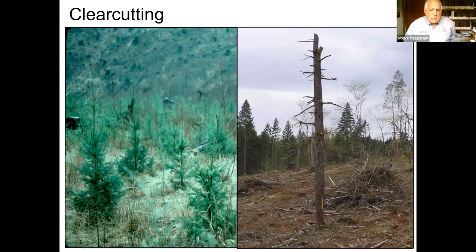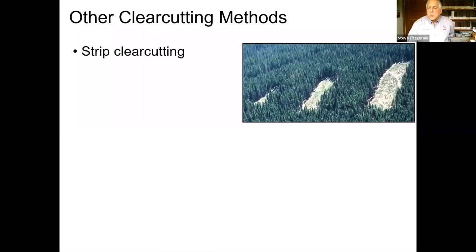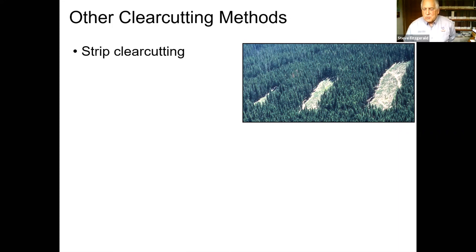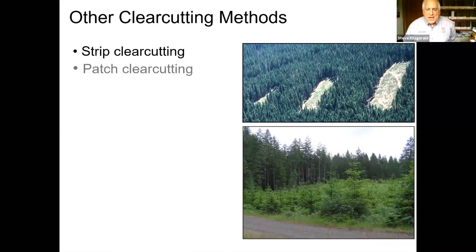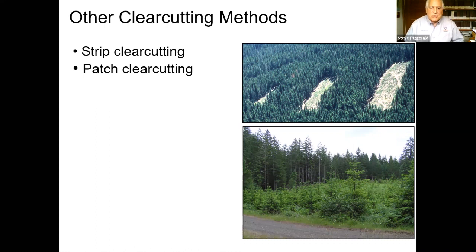Over time there have been different types of clear cutting methods. This includes strip clear cutting, which works for species that have light seed that can blow across the harvest unit — lodgepole pine is one example. You can see the first cut, and once it's regenerated, another strip on either side would be cut to regenerate that area. Patch clear cutting creates small openings — say four to eight acres — in a kind of amoeba shape to represent a natural disturbance pattern. This particular one is now eight years old and you can see the regeneration is up and growing.